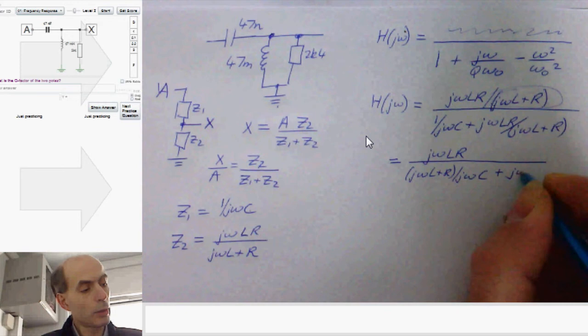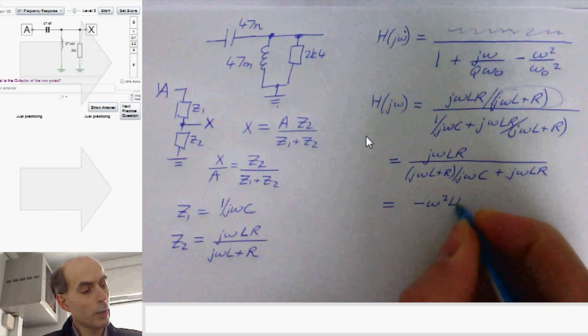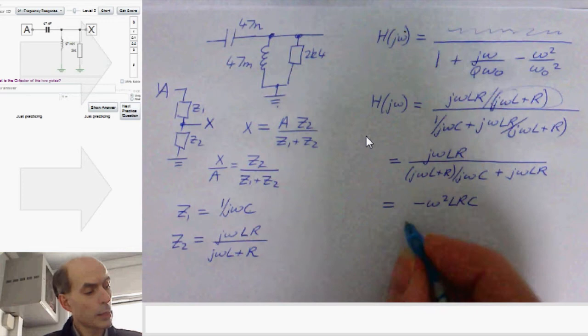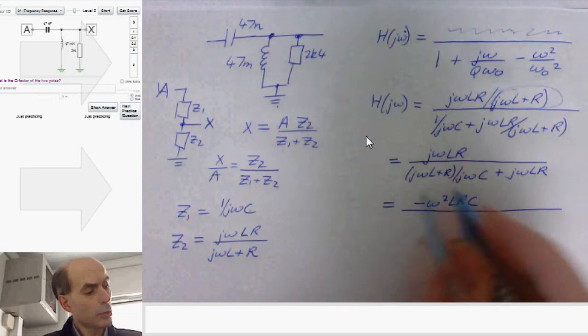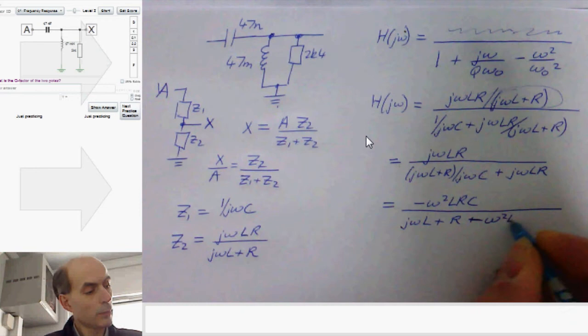And then I multiply through by jωC on top and bottom, and that would leave me with minus ω² LRC on the top, because j times j is minus 1, divided by, on the bottom here, I would get jωL plus R plus, in fact, minus ω² LRC.